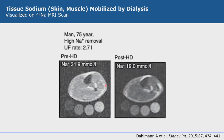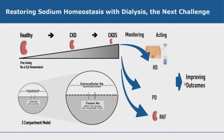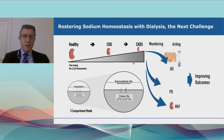A typical example: in a 75-year-old patient removing 2.7 liters, skin sodium content dropped from 32 millimoles to 19 millimoles — almost a 50% reduction within a four-hour dialysis session. The take-home message: salt accumulation across chronic kidney disease progression is tremendous, involving both extracellular and tissue compartments. We must monitor patients more adequately, act through hemodialysis, PD, or by preserving kidney function to improve outcomes.